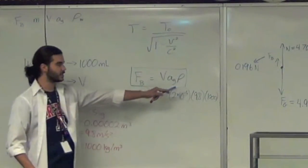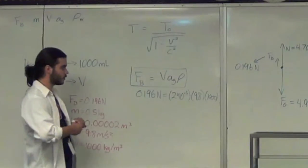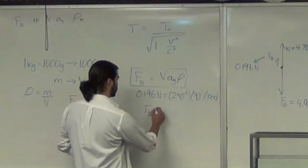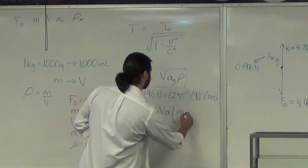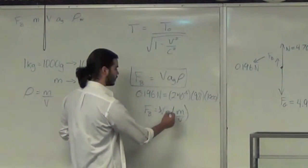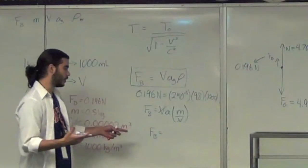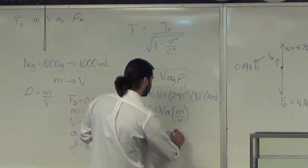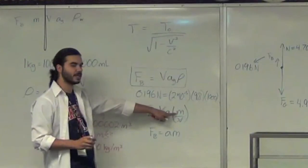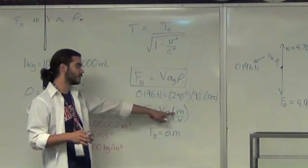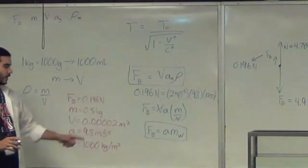But, there are multiple ways of writing this equation. Because, what does density equal? What is the formula for density? Mass over volume. Yeah, mass over volume. So, I could also write this as the buoyancy force is equal to volume times the acceleration due to gravity times mass over volume. Which means, these volumes cancel out, and you can say that the force, or the buoyancy force is equal to the acceleration due to gravity times the mass of what? This was density. So, this is the mass of the water, so this is the mass of the water displaced. This is another useful equation.